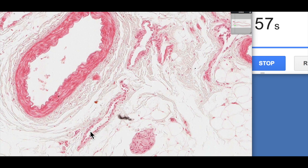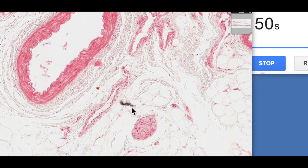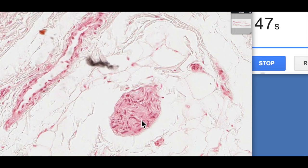Adjacent to that we've got a vein, you can see very thin walled, irregular in shape, a little bit of smooth muscle in the wall there but very thin wall. And then this little structure here, this is actually a little nerve.